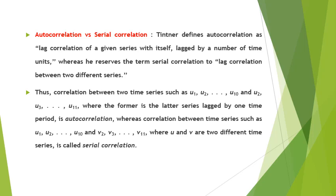Whereas correlation between time series such as U1, U2, ... to U10 and V2, V3, ... to V11, where U and V are two different time series and the V series is lagged by one time period, is the case of serial correlation. By following this convention, hereinafter we will use both terms simultaneously or interchangeably.